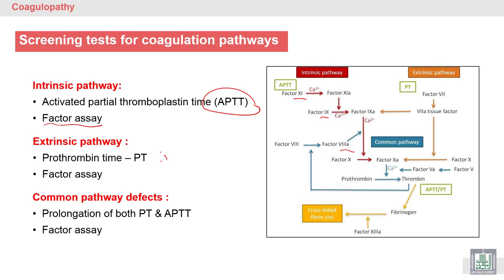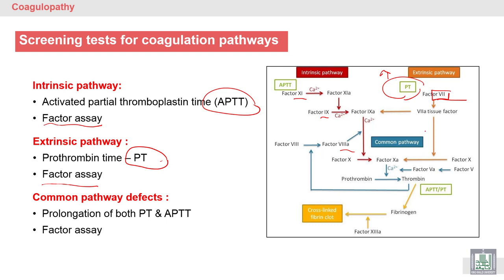For the extrinsic pathway, similarly, if we find prolongation of the prothrombin time (PT), we have to check factors like factor 7. So the steps are: first, screen by PT; if PT is prolonged, we quantitate factor 7.